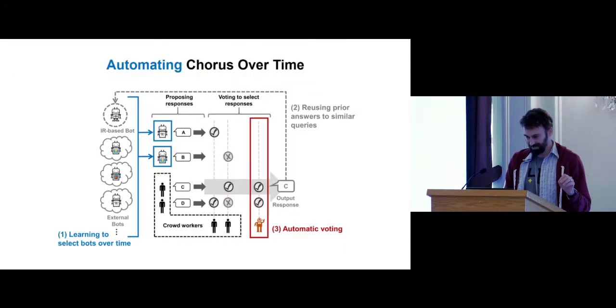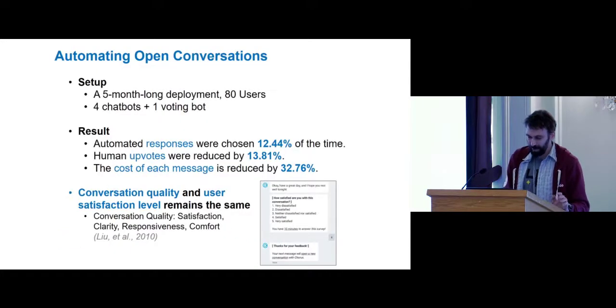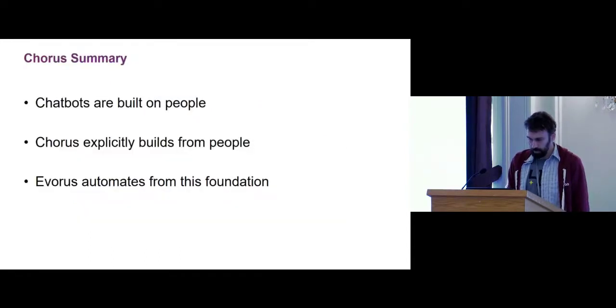Has anyone heard of Microsoft Tay? It's an amazing example of how you can't just do this sort of thing, learning from the crowd without human guidance, because it turns out people on the internet can be terrible. They released this bot that was supposed to learn from people talking to it on Twitter, and the whole thing devolved into the Microsoft bot being this hateful, terrible internet person. So we have automatic voting, but we don't just rely on automatic voting. We very carefully blend automated support for crowd workers to vote. We released this for several months. We found that we could reduce the human effort by about 12 or 13 percent, which in turn reduced the cost of each message by about 32 percent. And that still remains the same quality.